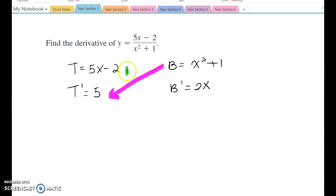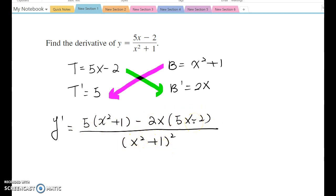We just confirm that through the property. Therefore, y prime equals 5 times x squared plus 1, minus 2x times 5x minus 2, all over x squared plus 1 squared. So now you expand it, then it becomes 5x squared plus 5 minus 10x squared plus 4x.